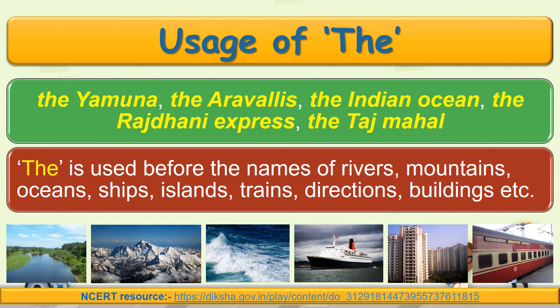'The' is also used before the names of rivers like the Yamuna, mountains like the Aravallis, oceans like the Indian Ocean, ships, islands like the Andaman and Nicobar Islands, trains like the Rajdhani Express, directions like the east, the west, the north, and buildings and monuments like the Taj Mahal.